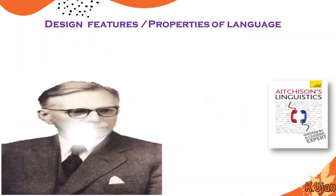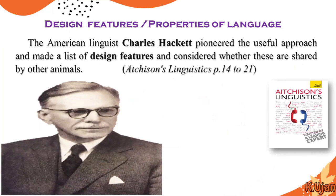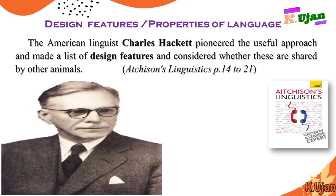Most of the material in this lecture series is taken from the book 'Adjacent Linguistics.' According to this book, the American linguist Charles Hockett pioneered a useful approach and made a list of design features — or properties — of language, and considered whether these are shared by other animals. Through these properties or design features, he explained whether they are possessed by other animals or only by human beings.